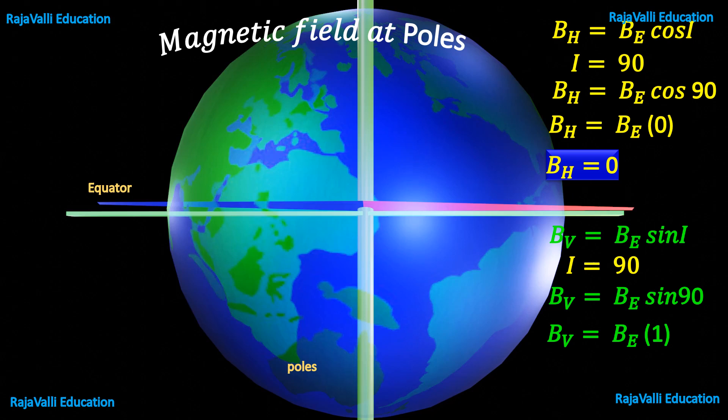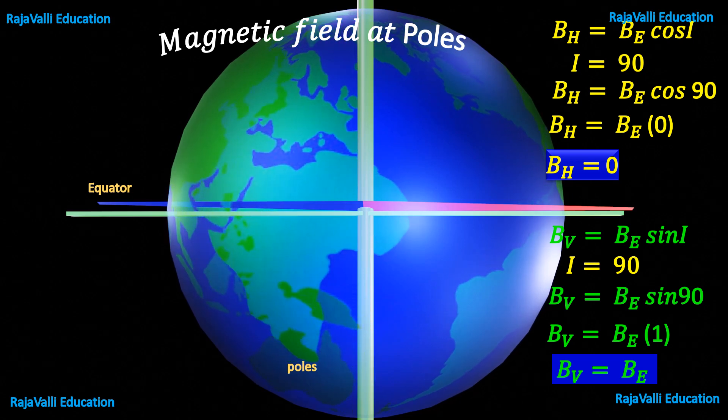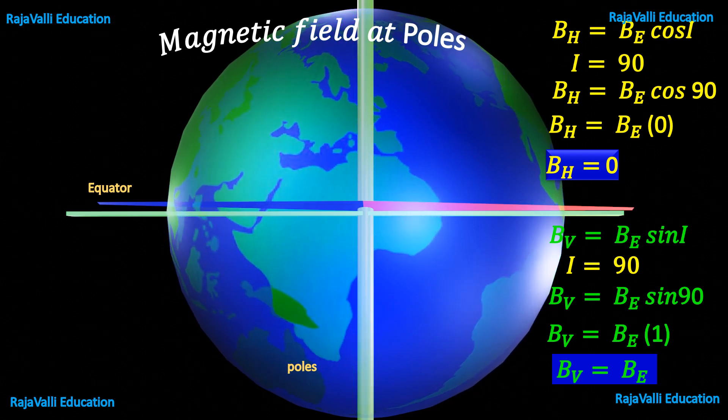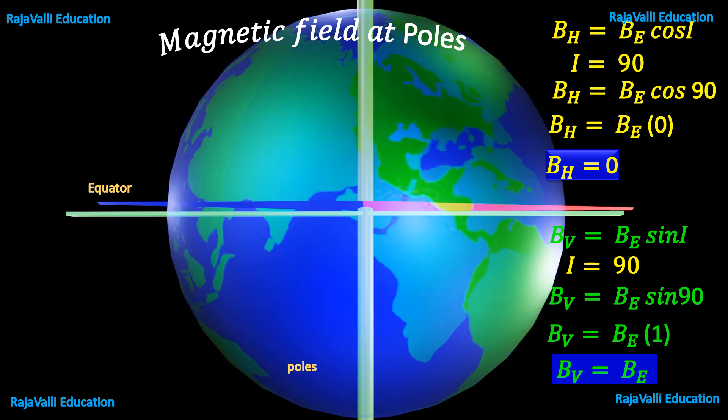So, magnetic field at poles: the horizontal component value is 0 at poles and the vertical component value is maximum.